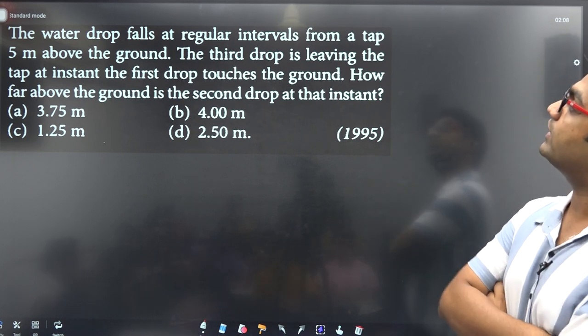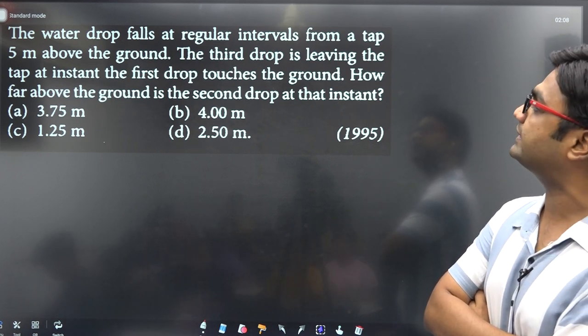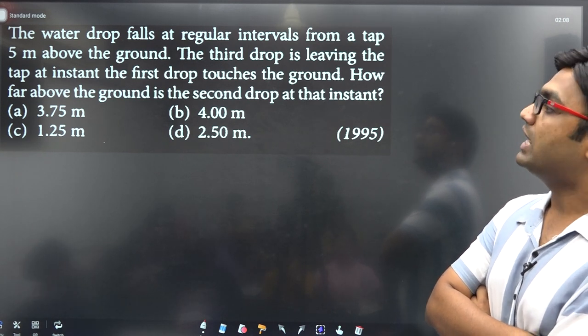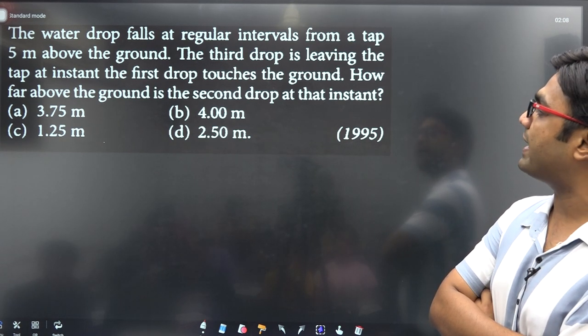The water drop falls at regular intervals from a tap five meters above the ground. The third drop is leaving the tap at the instant the first drop touches the ground. How far above the ground is the second drop at that instant?